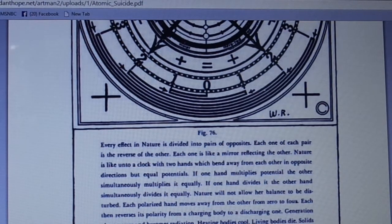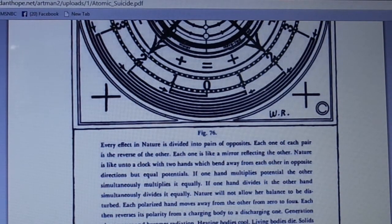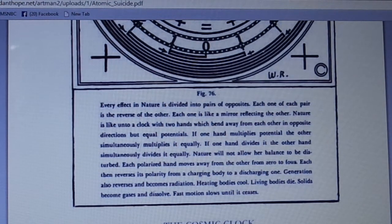From a charging body to a discharging one, generation reverses and becomes radiation. Heating bodies cool, living bodies die, solids become gases and dissolve, fast motion slows until it ceases. This is the cosmic clock, illustrating the impossibility of disturbing the balance of God's universe by even the weight of one electron.